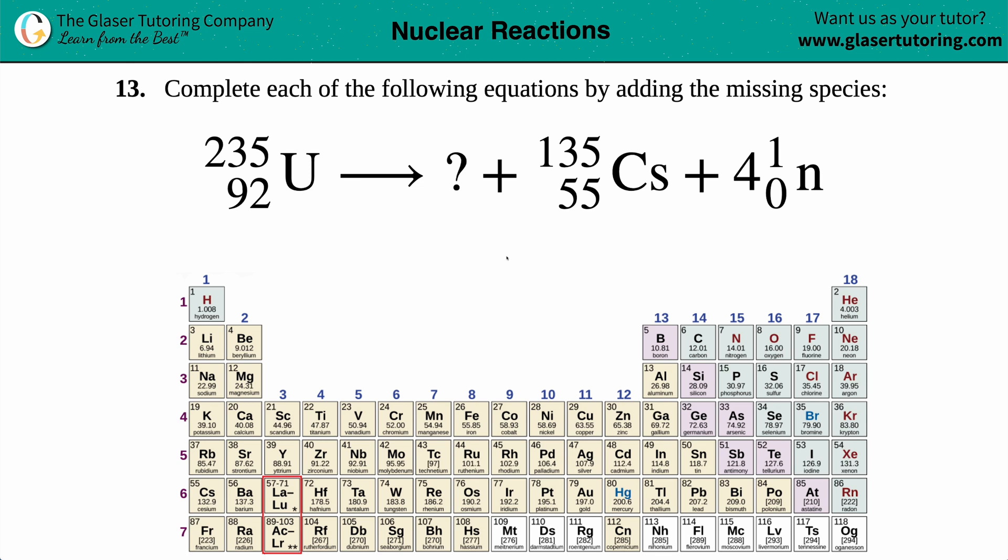Number 13. Complete each of the following equations by adding the missing species. The missing species for this nuclear reaction is this question mark right here. So it seems like big bad uranium's come into town. Capital U, uranium.